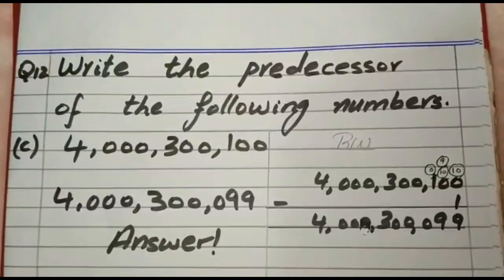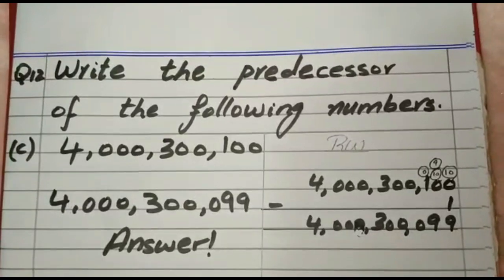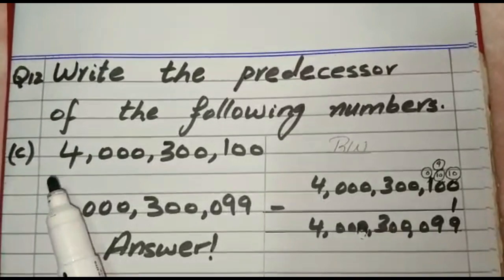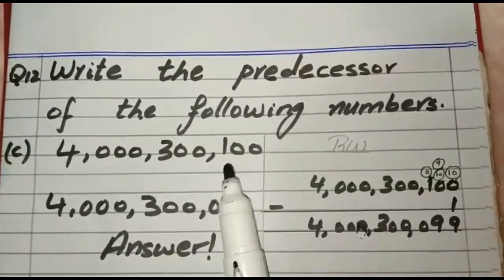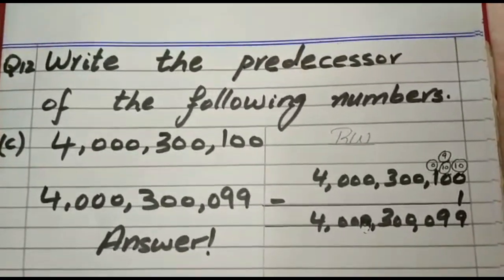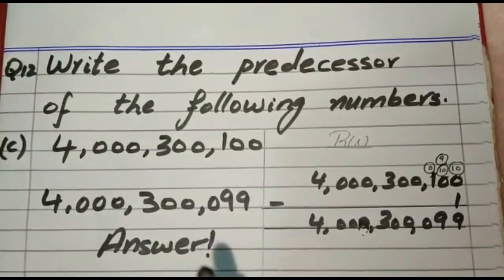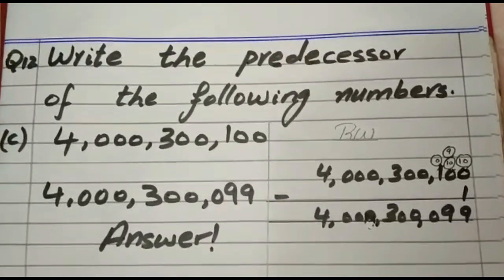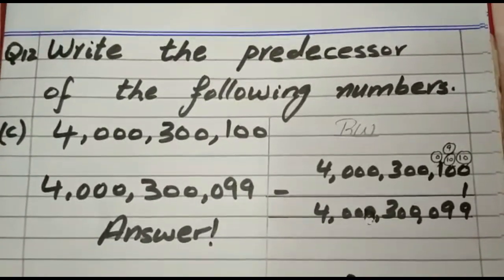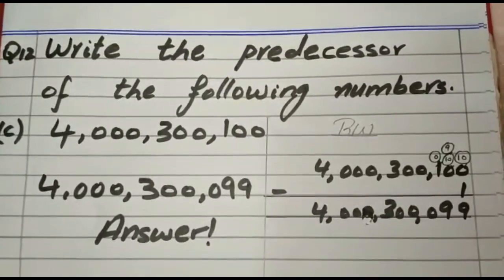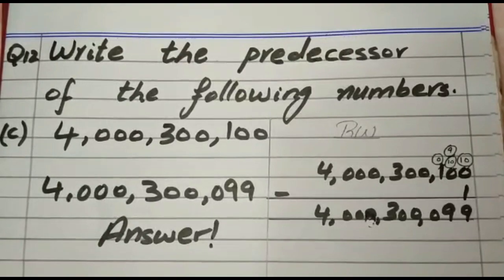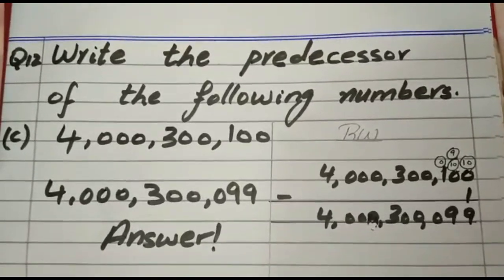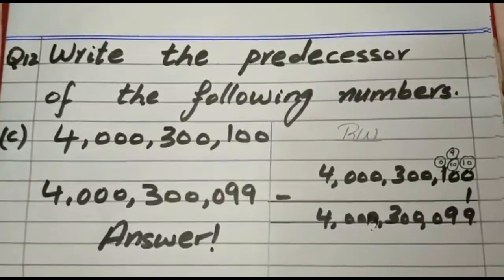Question number 12. Write the predecessor of the following numbers. Predecessor means the previous number. Now part C. 4,000,300,100. We have to subtract 1 from this number to find its predecessor. Students always remember you have to subtract 1 in the rough column. Rough column is visible and clear. And one more thing. You have to draw a rough column line with the help of scale. Use of scale is compulsory.